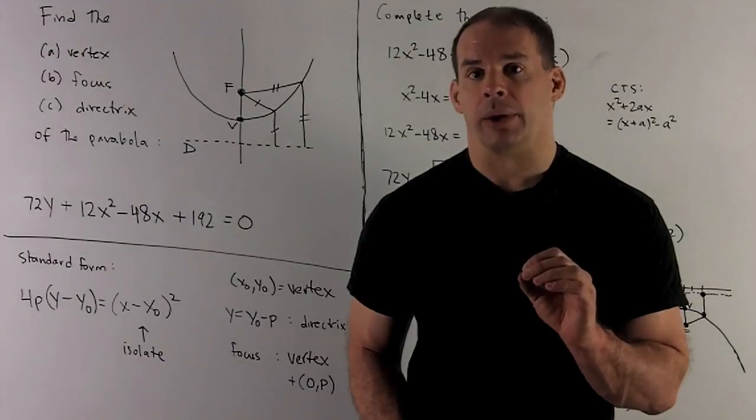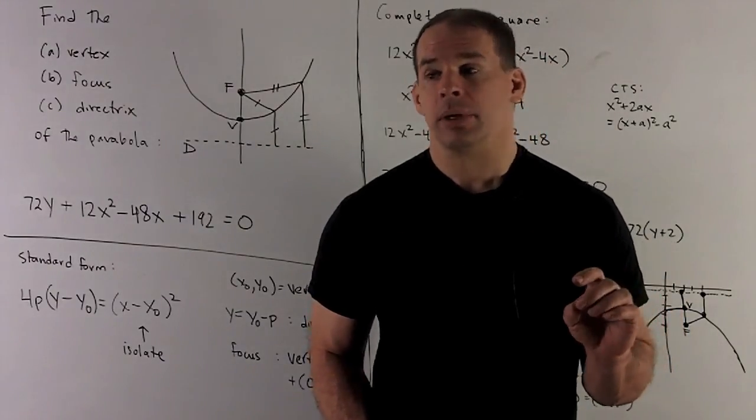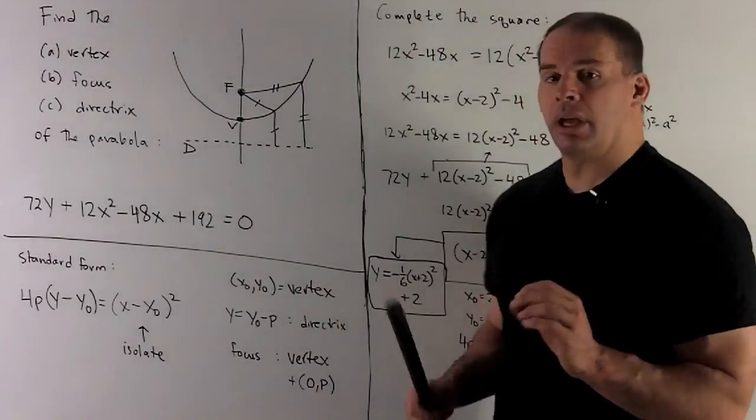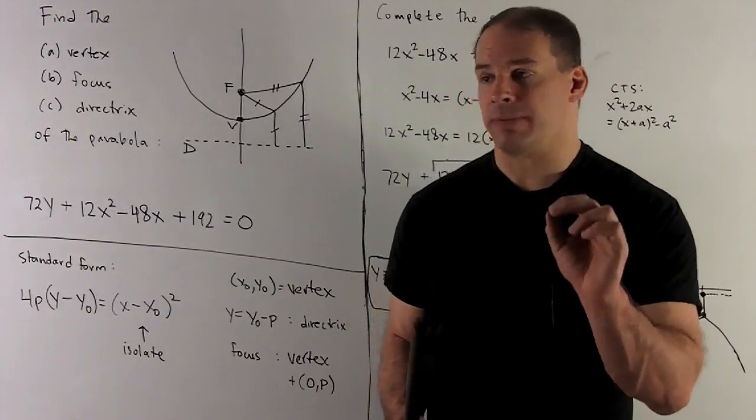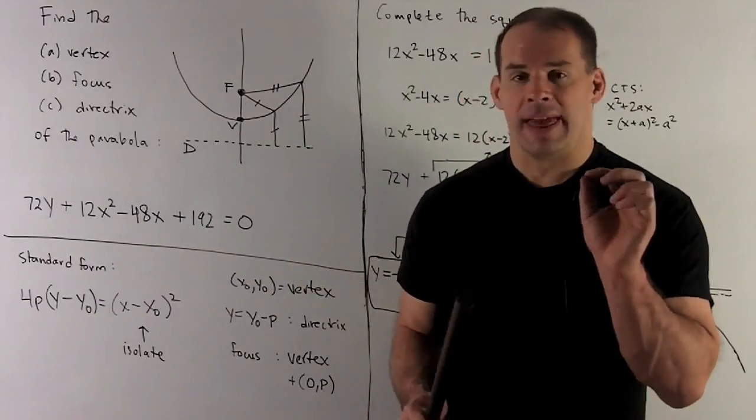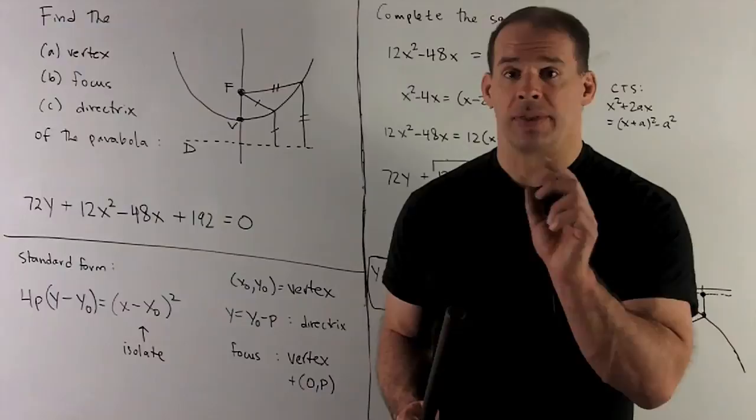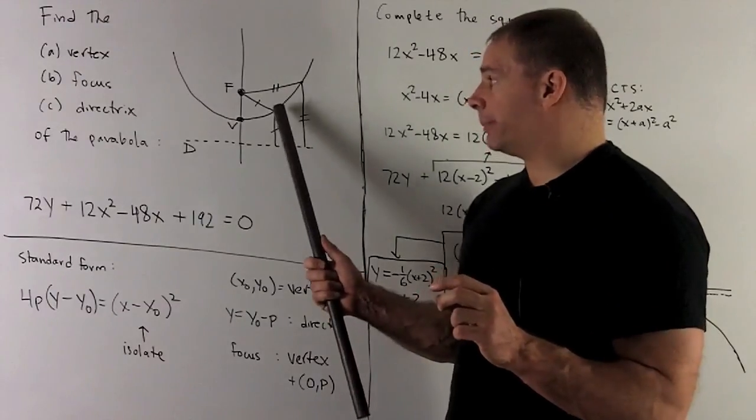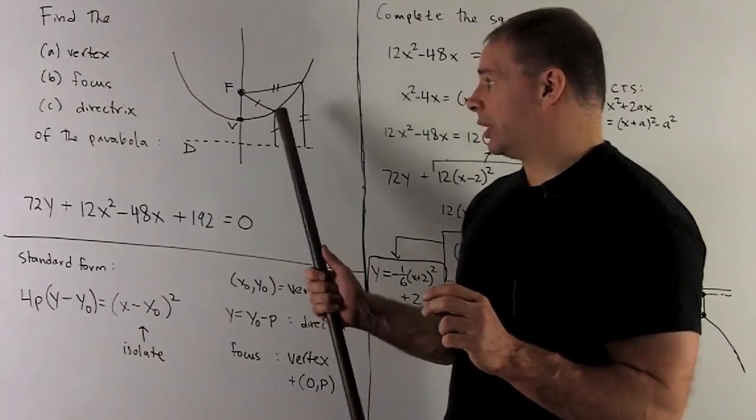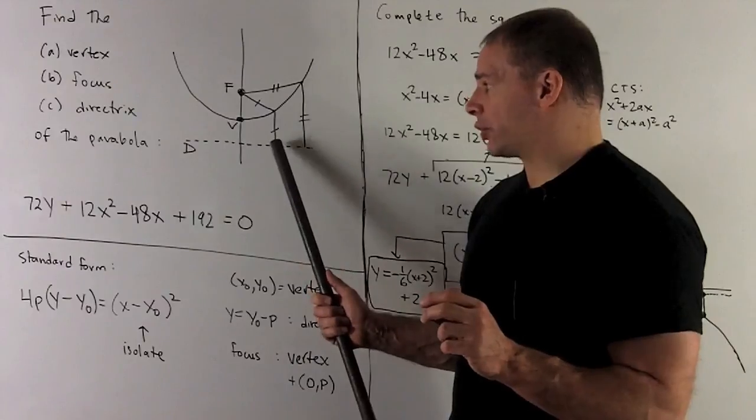I want to create a parabola, what do I do? Put a line down, we'll call that the directrix. Choose a point, call that the focus. Then we're going to take all points so that the distance from your point to your focus equals the distance from the point to the directrix. We're talking shortest distance here.